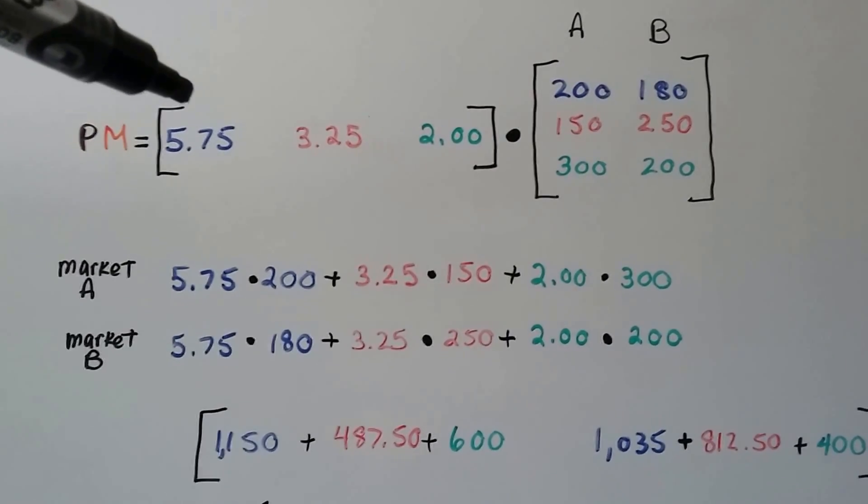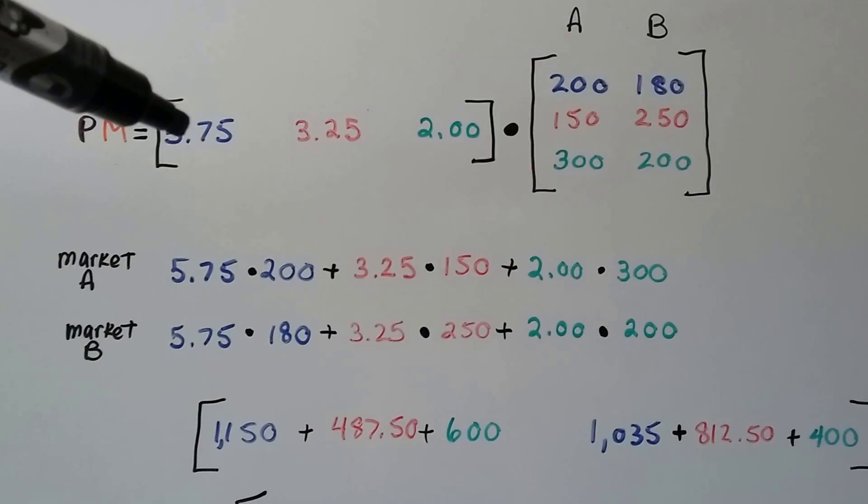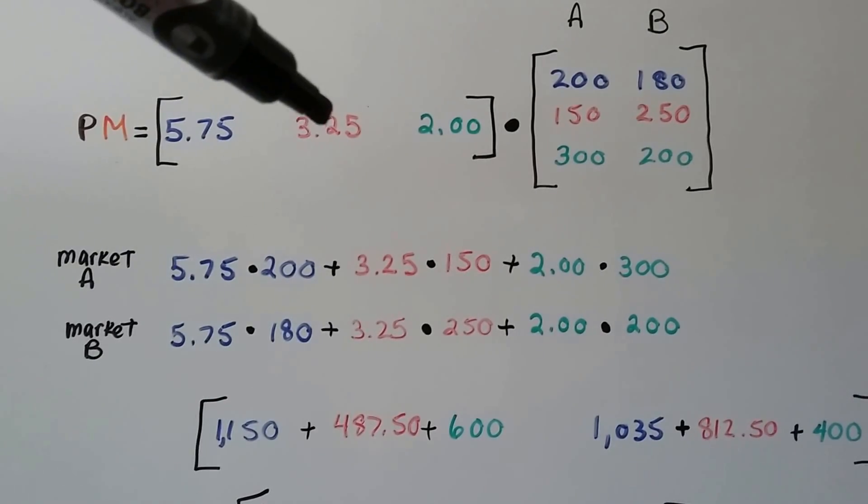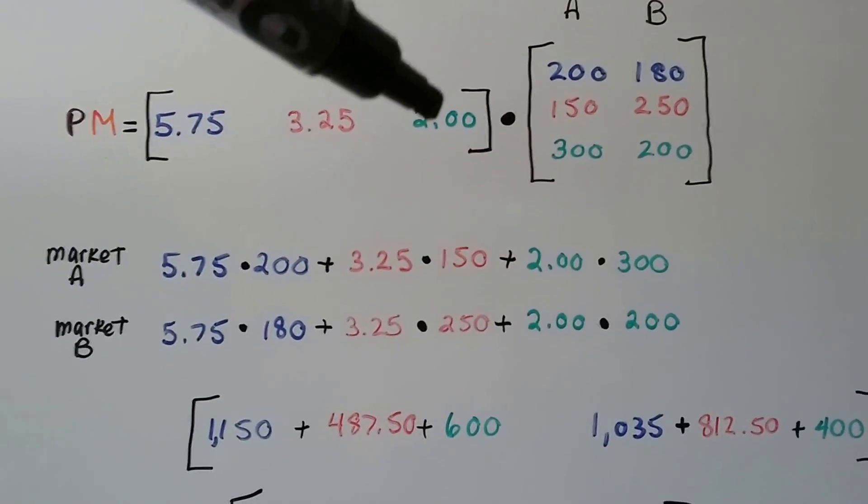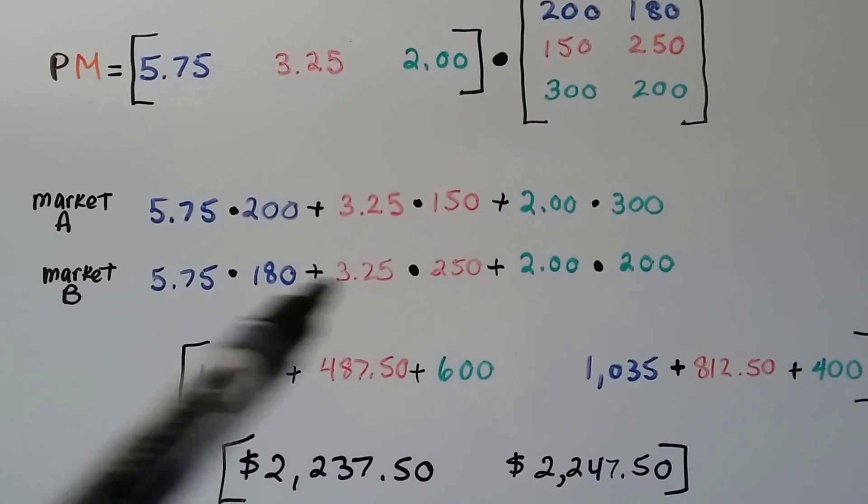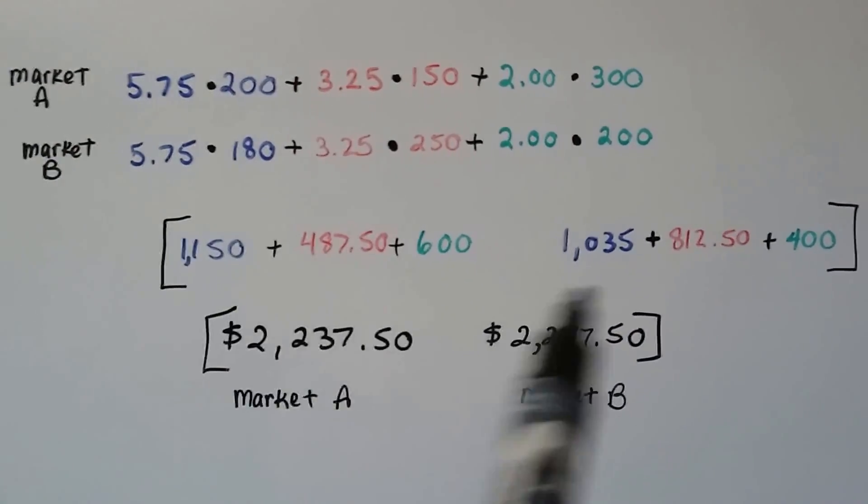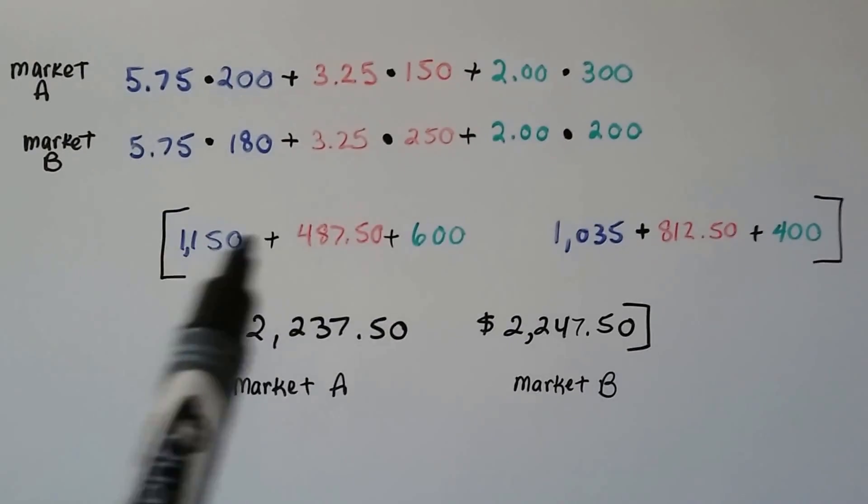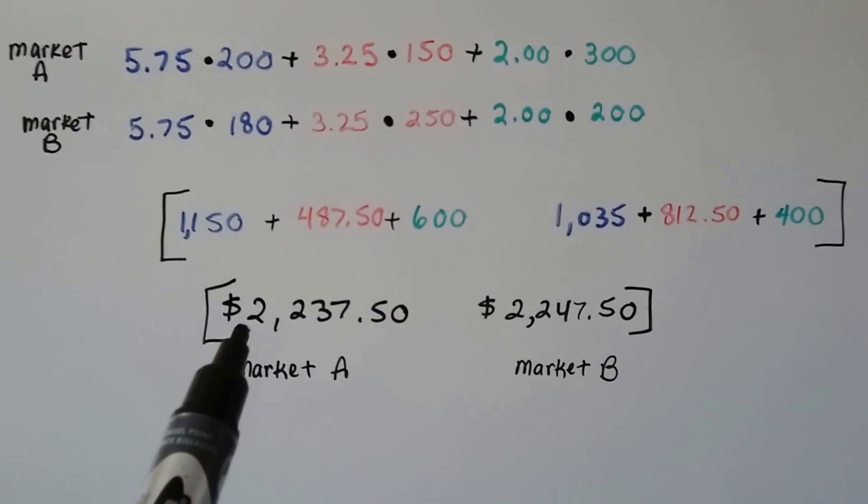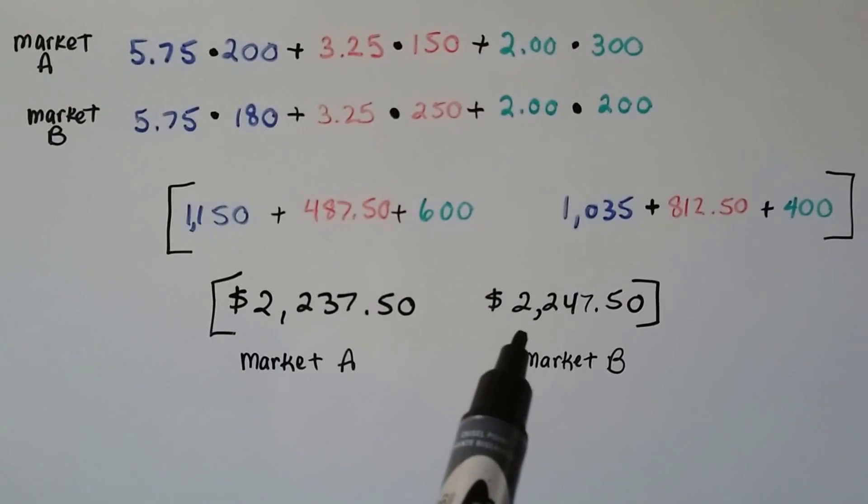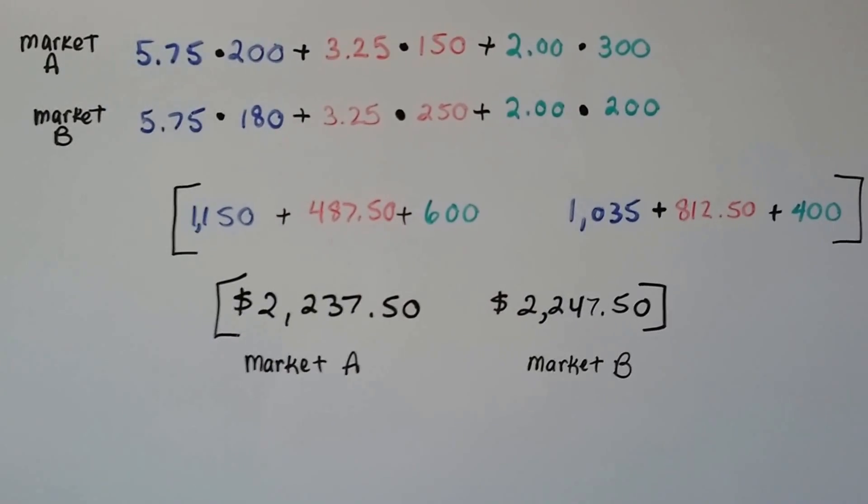Then we do the same thing again for market B. We do $5.75 times the 180, the $3.25 times the 250, and the $2 times the 200. We do our multiplication and addition. Here's market A, here's market B. We add these all up, and we get $2,237.50 for market A and $2,247 for market B.